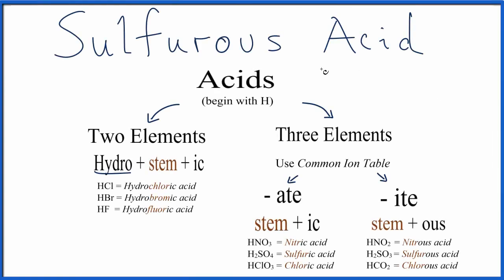To write the formula for sulfurous acid, we use this flowchart here to guide our work. We can see if we have hydro, the stem (the sulfur here), and an ending of ic, we're going to have two elements. Since we don't have hydro and it doesn't end in ic, it's going to be three elements.